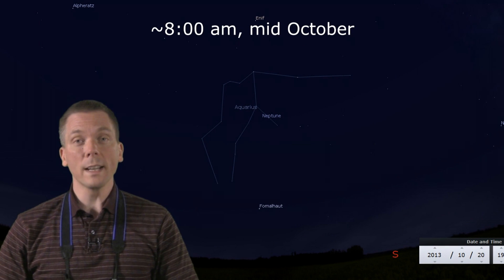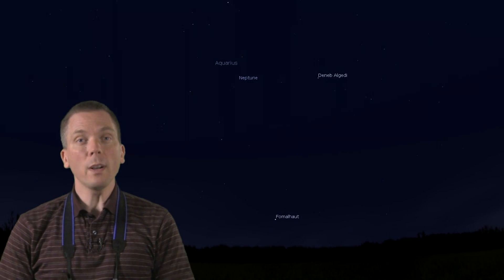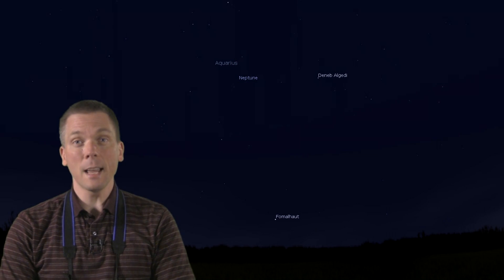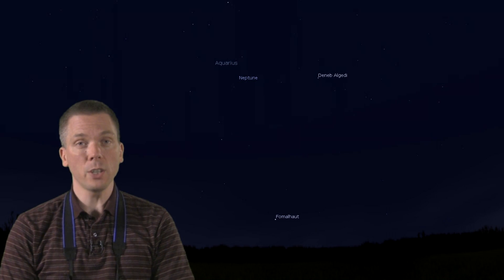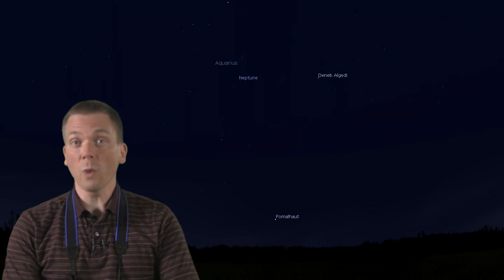There are two ways to go, one is from Capricornus. 2.9 magnitude star Deneb al-Jedi, and its close-by companion to the west, 3.7 magnitude Nashira, nearly point right to Neptune.